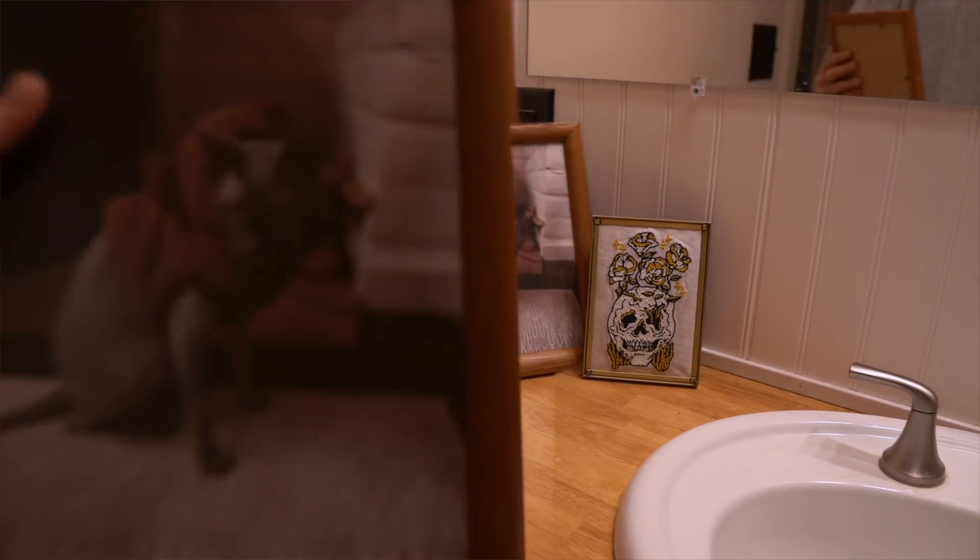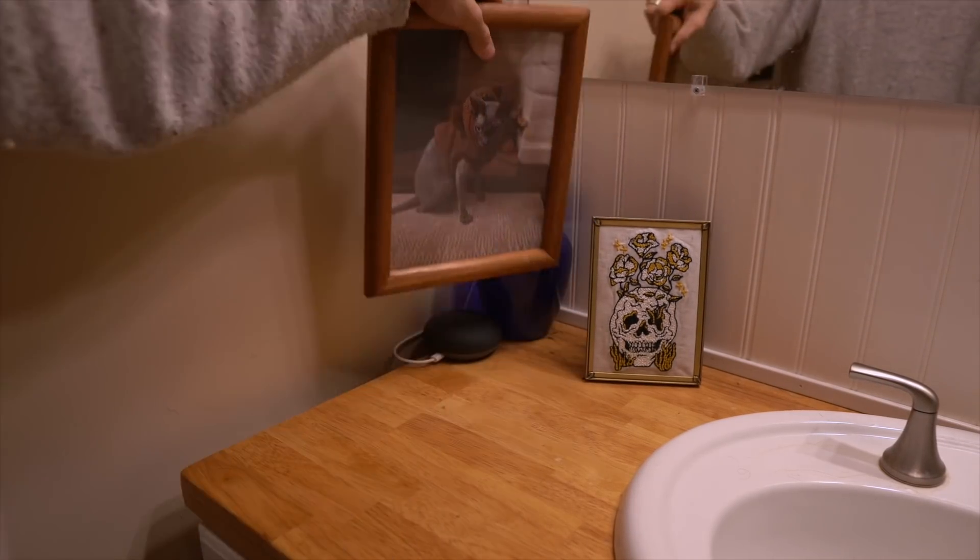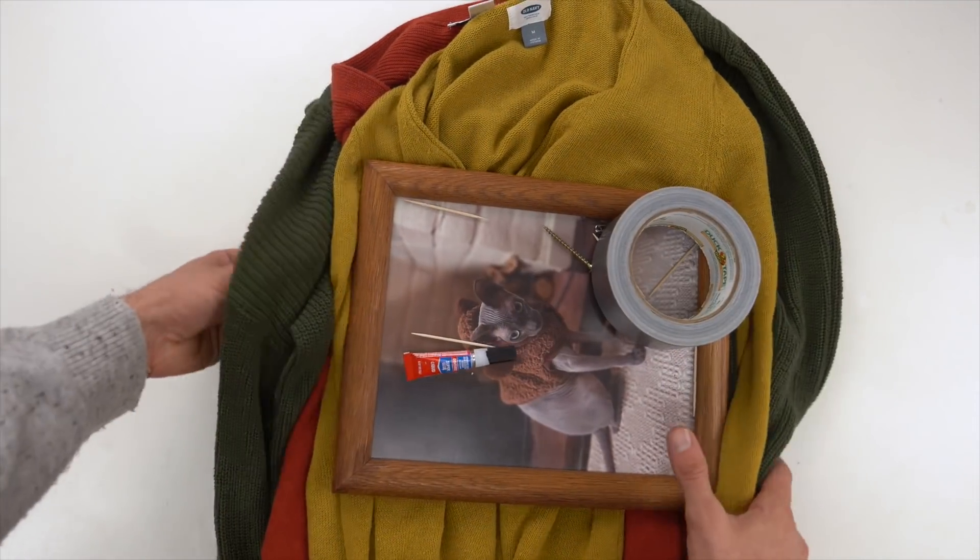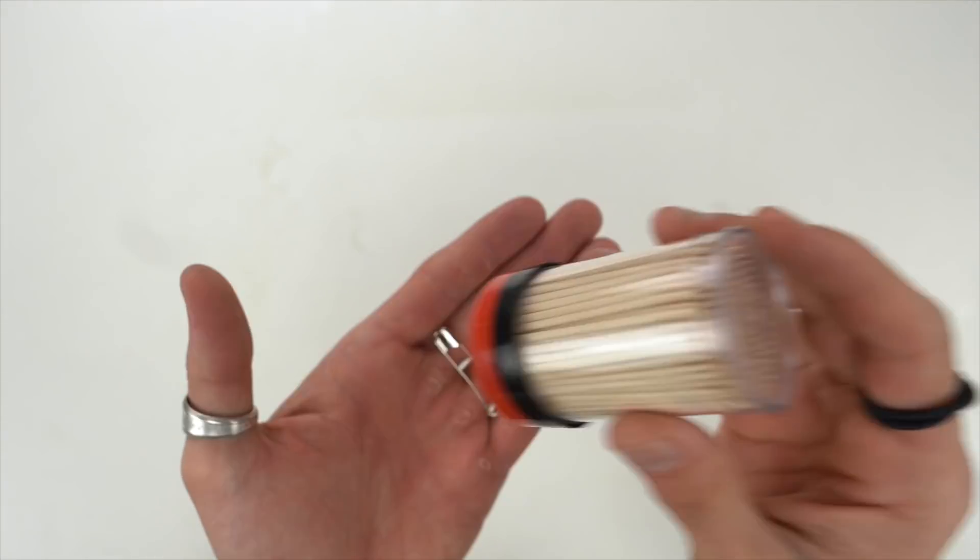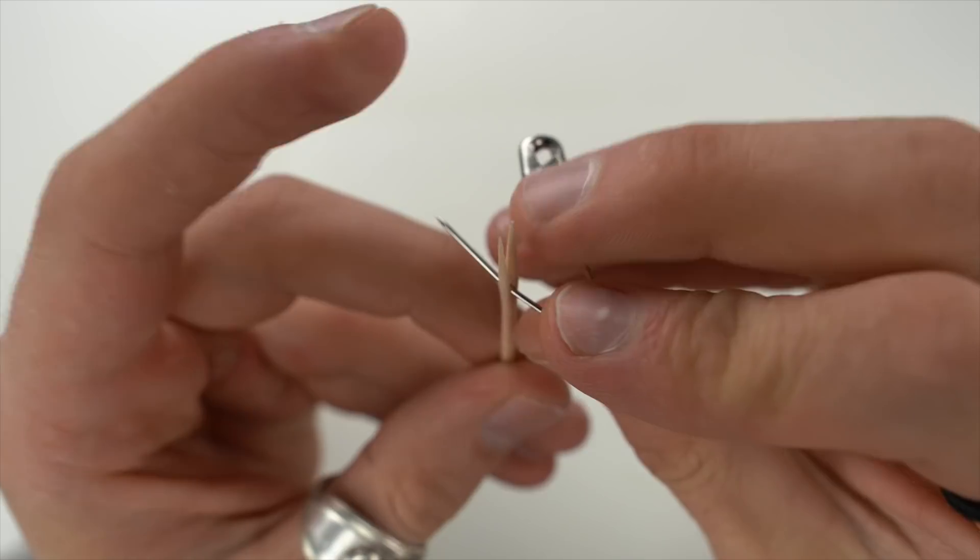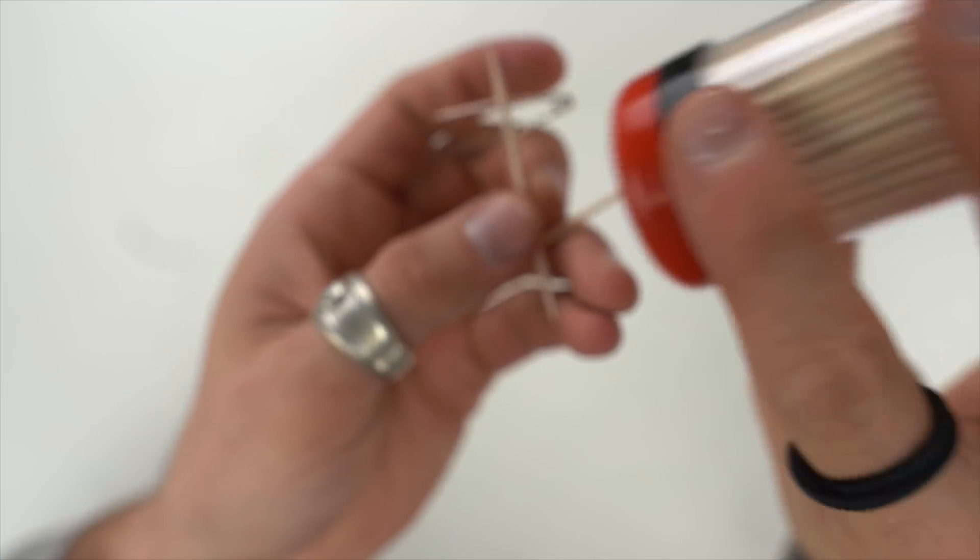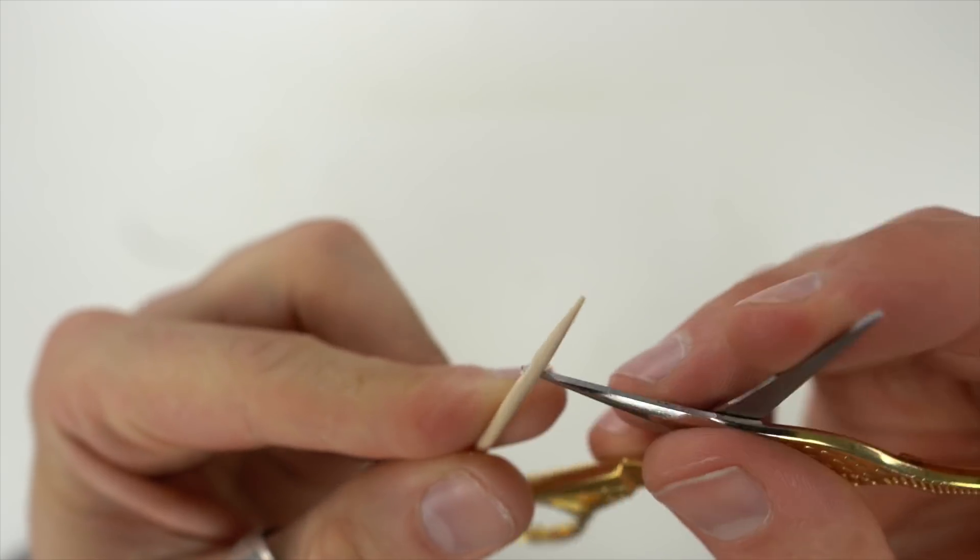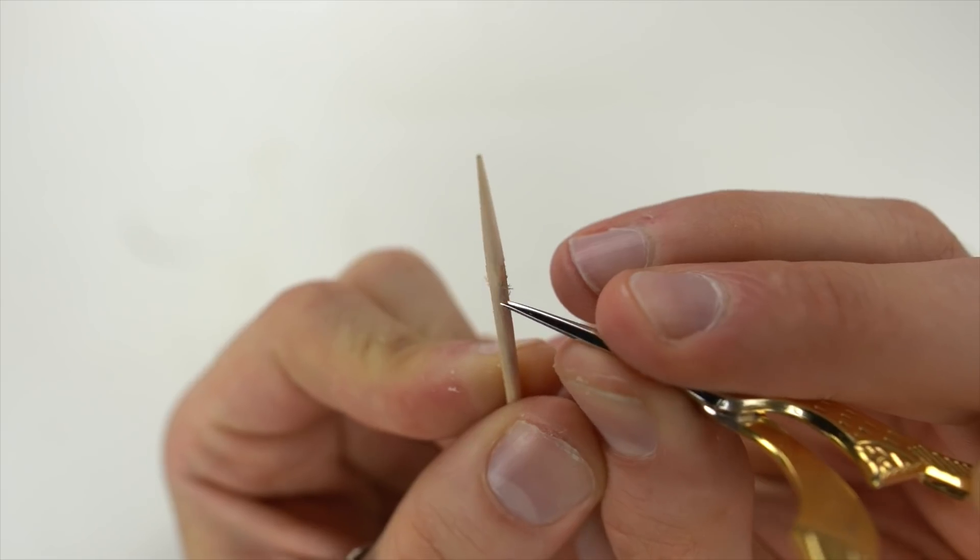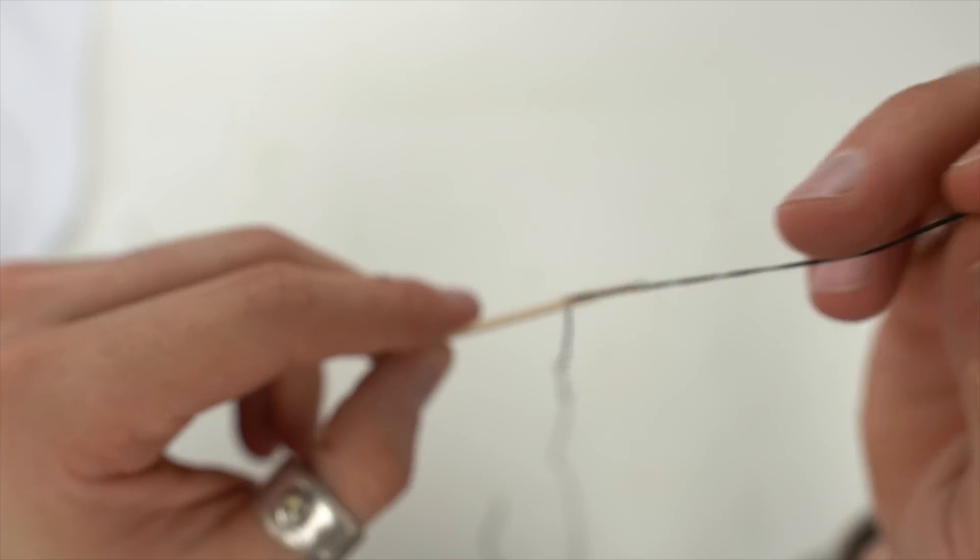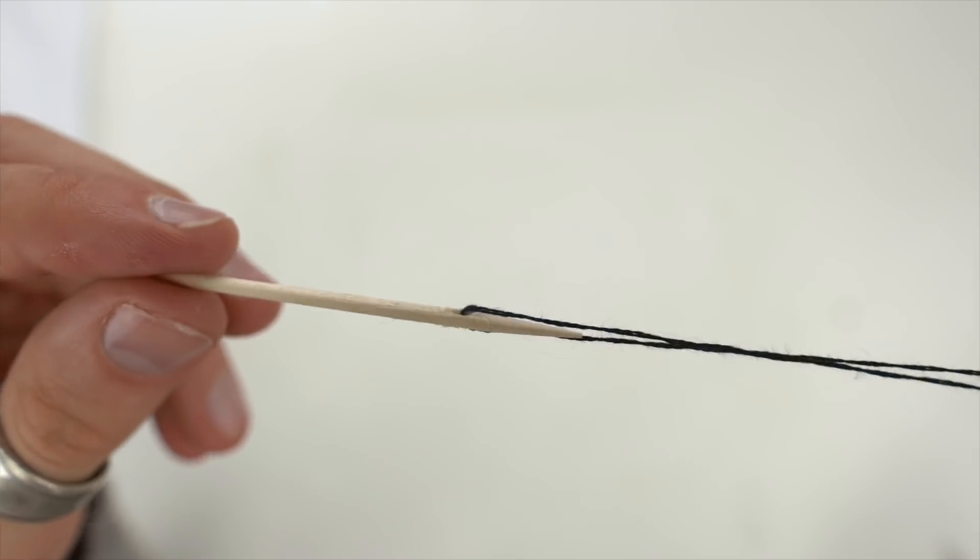But when it comes down to it, all this supplies from a craft store is like maybe five bucks. So now it's turned more into like can I actually do this? So first to make a needle I'm going to use this toothpick and safety pin. I broke that and then ended up using a tiny little scissors to just drill a hole into the toothpick. And hopefully that works.